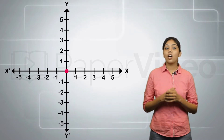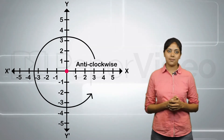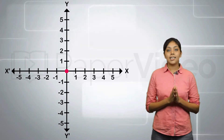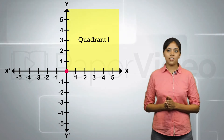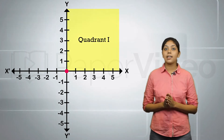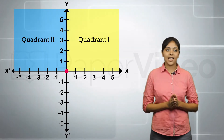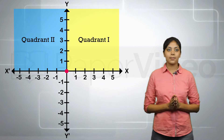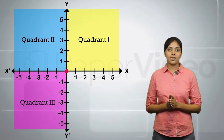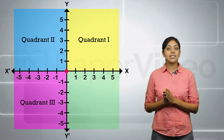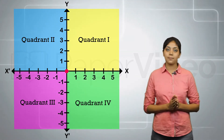The quadrants are numbered in the anti-clockwise direction. This part is known as the first quadrant, this part is known as the second quadrant, this is the third quadrant, and this part is the fourth quadrant.